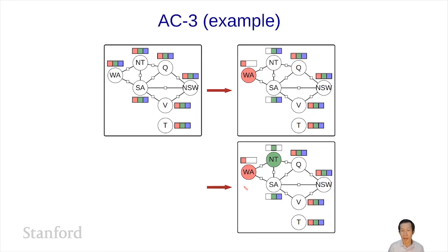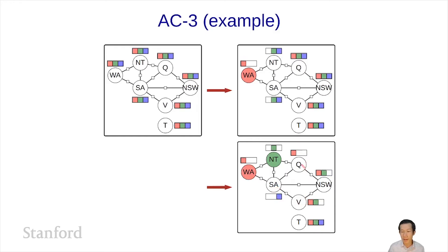Suppose now in the next level of backtracking we assign NT green. Again, we enforce R-consistency on the neighbors of NT, which eliminates green from those two. Notice that one step should look very familiar — this is exactly forward checking. But AC3 doesn't stop there. It then enforces R-consistency on the neighbors of Q and SA. Enforcing R-consistency on the neighbors of SA eliminates blue from its neighbors. Enforcing R-consistency on the neighbors of Q eliminates red from its neighbors. Enforcing R-consistency on the neighbors of NSW eliminates green. And at this point, we're done.